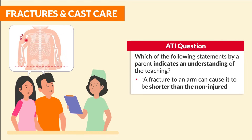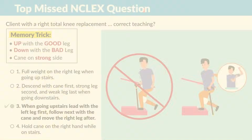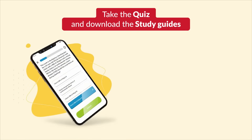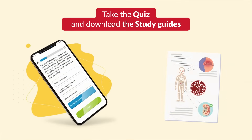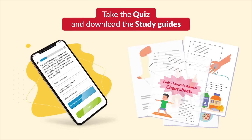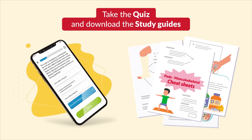ATI asks: which of the following statements by a parent indicates an understanding of teaching? A fracture to an arm can cause it to be shorter than the non-injured arm. Speaking of uneven limbs, let's cover all the key points for the top-tested Buck's traction.